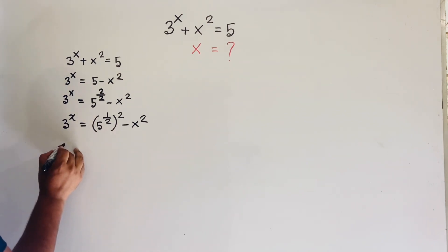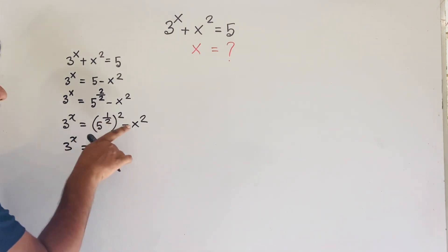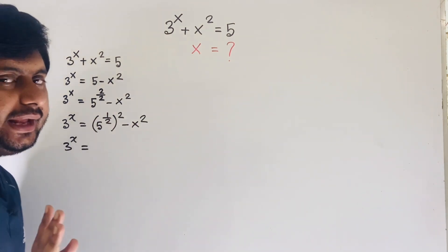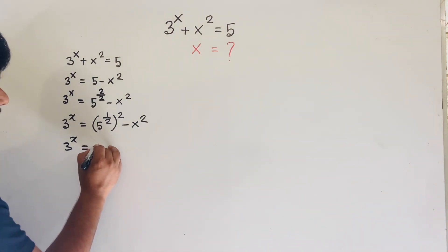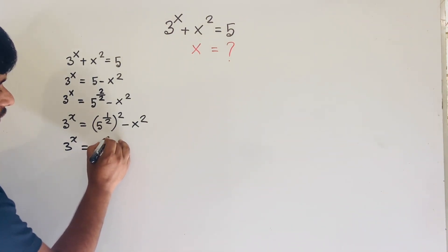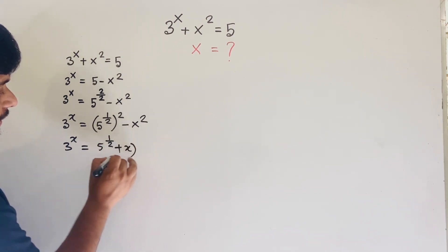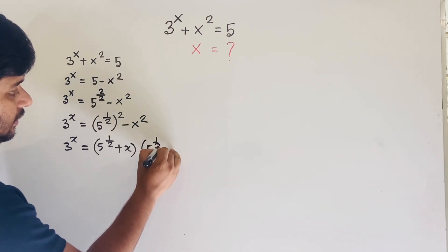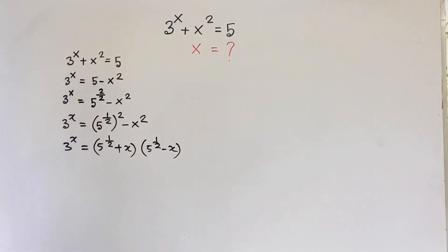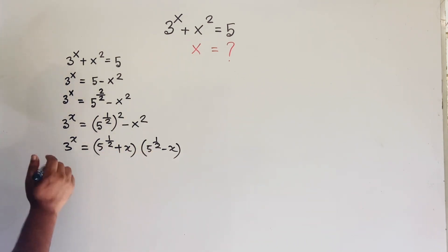Now applying the difference of squares identity a² - b² = (a + b)(a - b), I can factor the right side: 3^x = (5^(1/2) + x)(5^(1/2) - x).